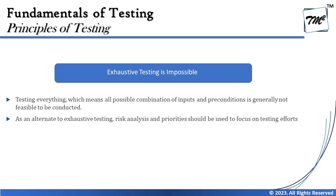Principle number two: exhaustive testing is impossible. This is about testing a simple application with all possible combinations of inputs and their respective outputs. For example, if we test a login screen with two fields — username and password — we might think four combinations are enough: valid/valid, invalid/valid, valid/invalid, and invalid/invalid. But if you deep dive, you realize that 'invalid' has multiple possibilities, creating permutations and combinations with no end.